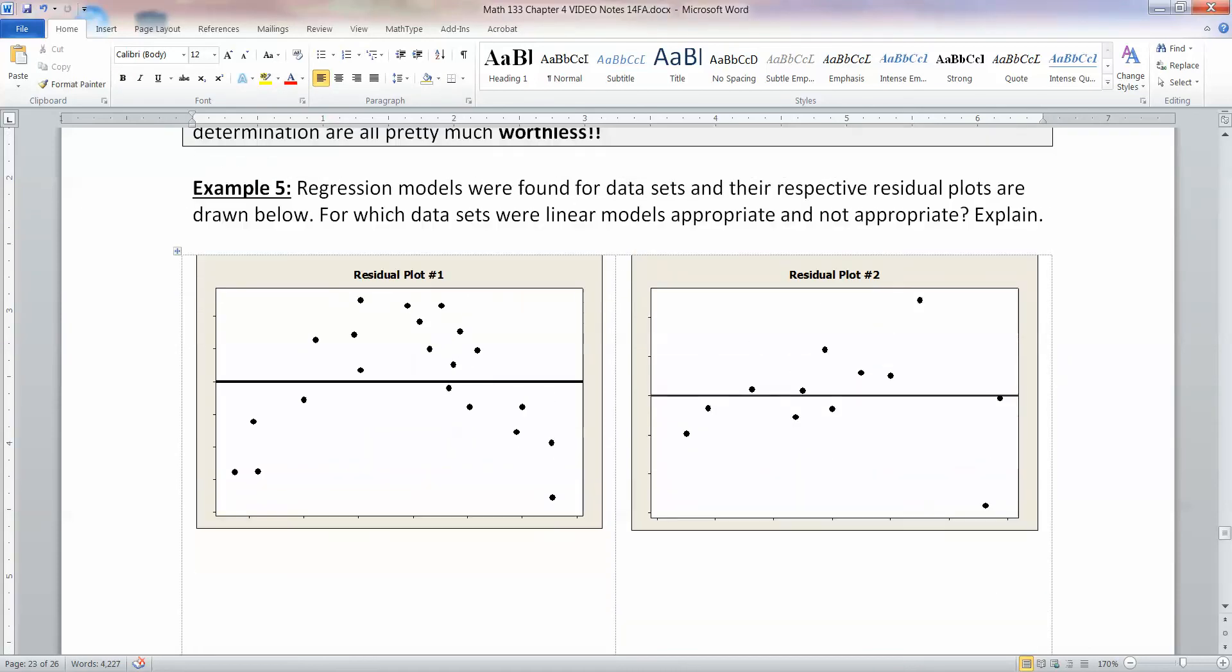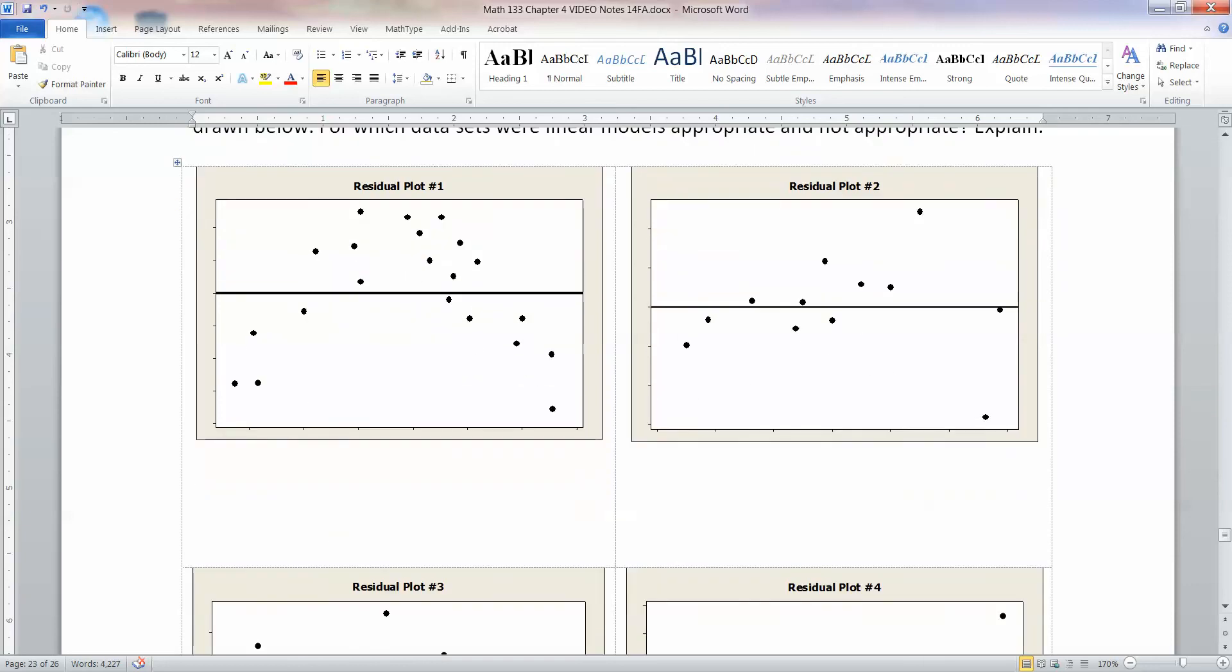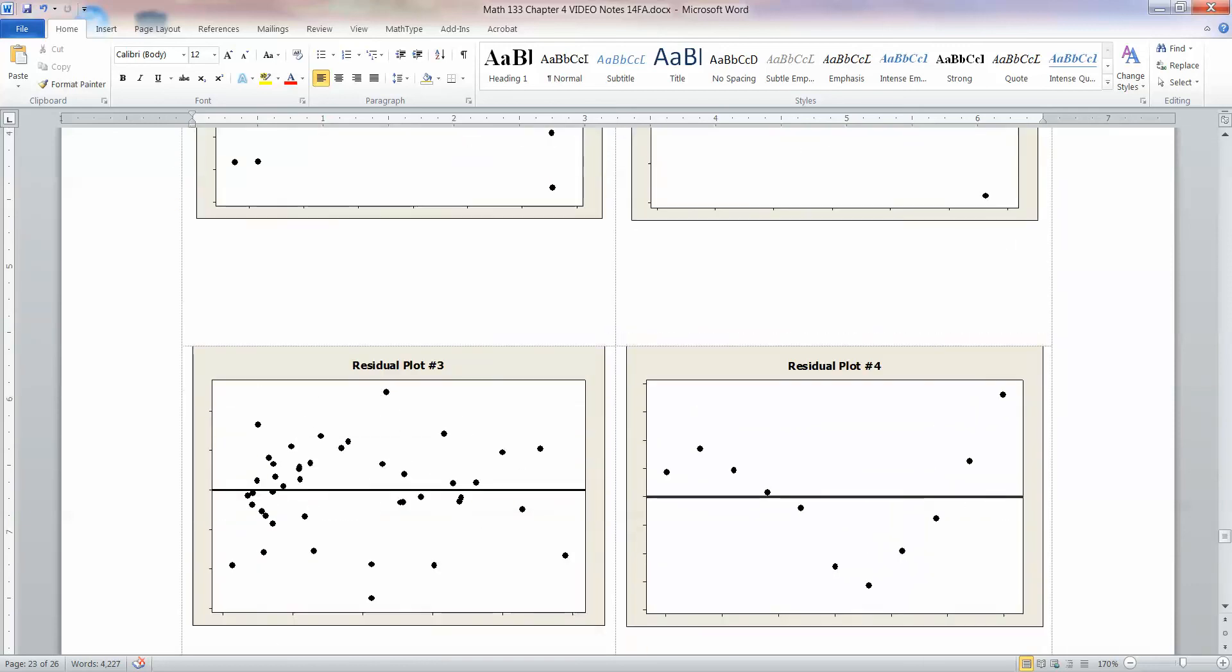All right, so let's consider some residual plots. We have the regression models were found for data sets and their respective residual plots are drawn below. For which data sets were linear models appropriate and not appropriate? So these are residual plots. So we have plot 1, 2, 3, and 4.